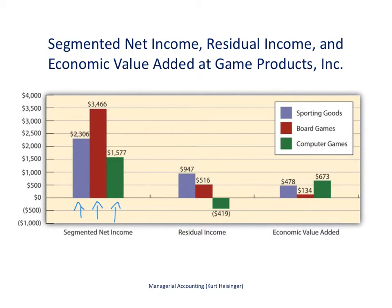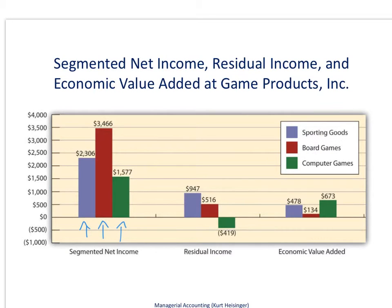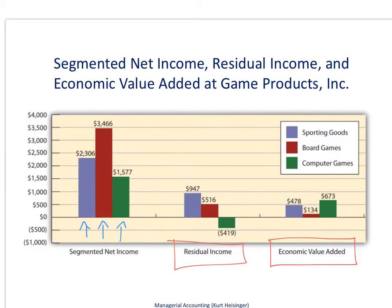Residual income is the next graph shown. This shows that sporting goods and board games were positive in terms of residual income, while computer games is negative in terms of residual income for the year. Finally, economic value added is at the far right — sporting goods has a positive EVA dollar amount, as does board games, and computer games happens to be the highest using economic value added. Go back to the separate video on economic value added to see why that's the case.